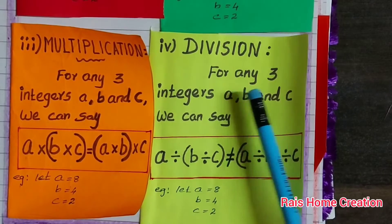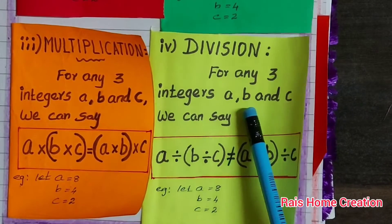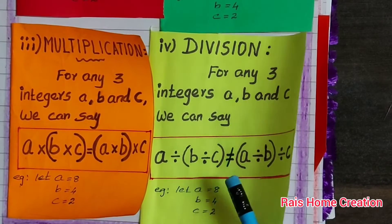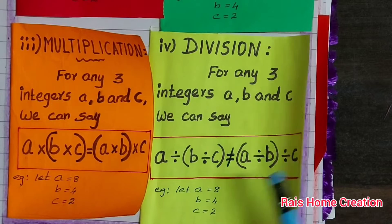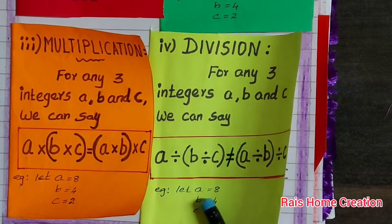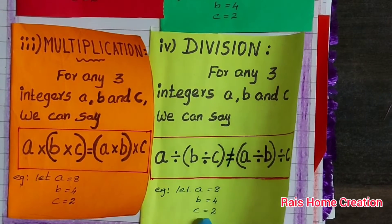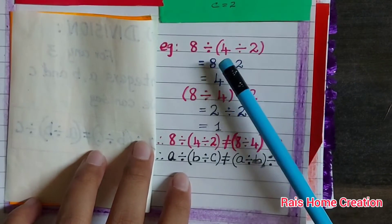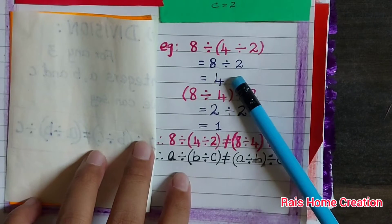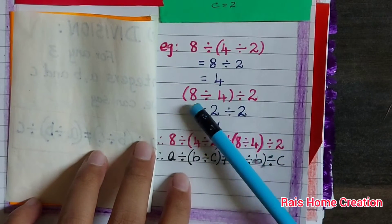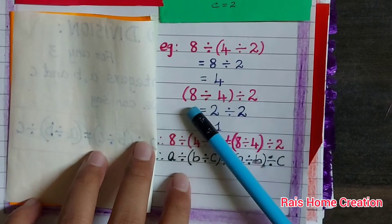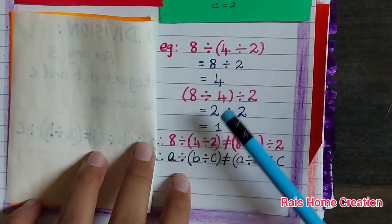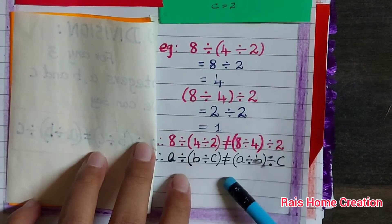Division. For any three integers A, B and C, we can say (A divided by B) divided by C is not equal to A divided by (B divided by C). Example: let A equal to 8, B equal to 4, C equal to 2. 8 divided by 4 divided by 2: 4 divided by 2 equal to 2, 8 divided by 2 equal to 4. 8 divided by 4 equal to 2, 2 divided by 2 equal to 1. Both answers are not same. Hence, the condition is not equal.